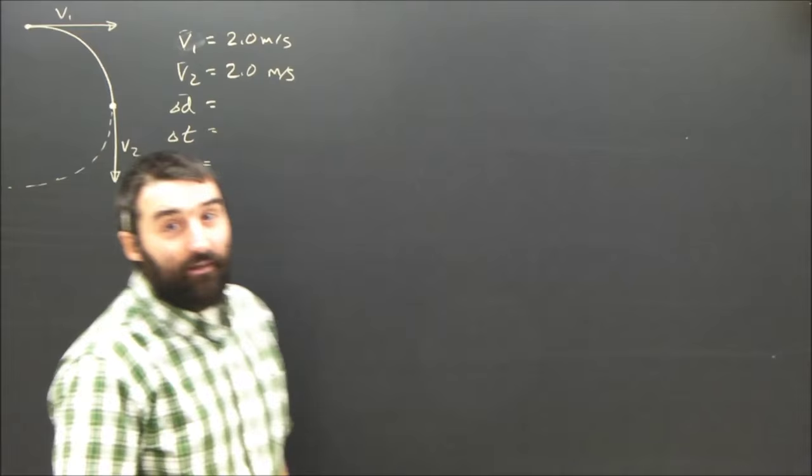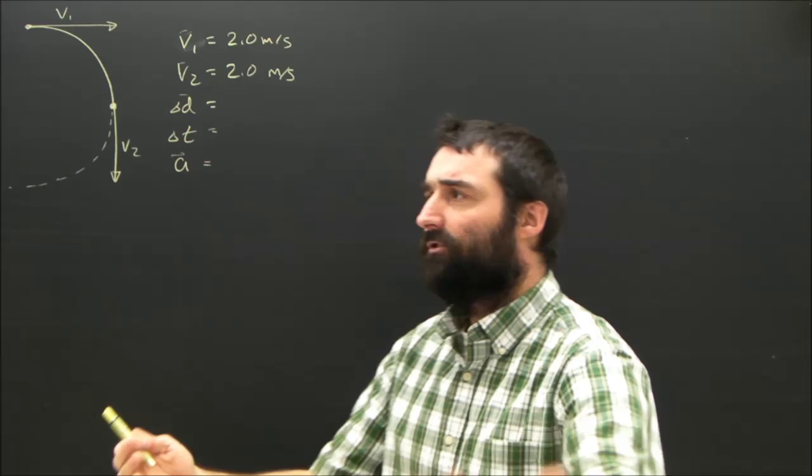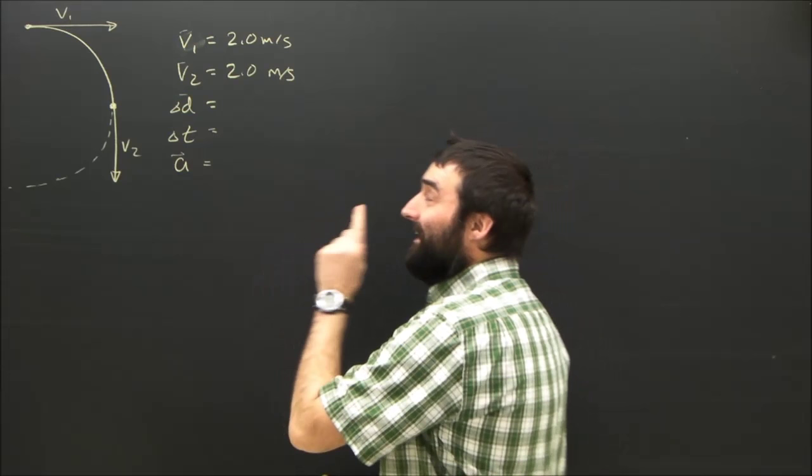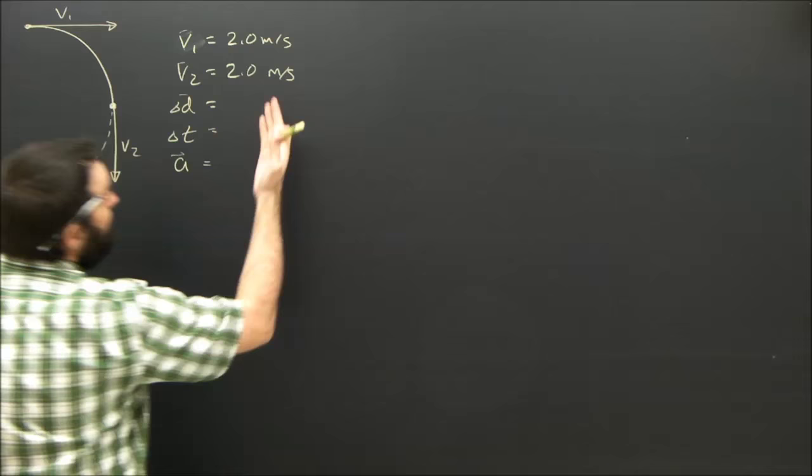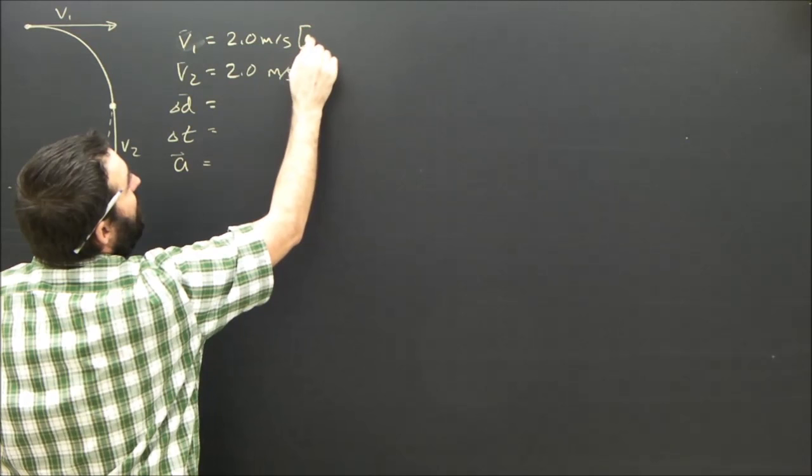Now the most rookie mistake here, the grade 11 mistake here, is to say, well, the acceleration, 2 minus 2 is zero. There is no acceleration. But someone who has learned physics knows that acceleration is not a change in speed over time. It is a change in velocity, and are these two velocities the same? Definitely, definitely not. So the difference in them is not going to be zero.